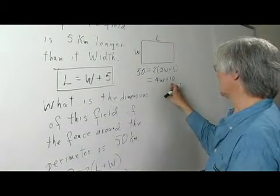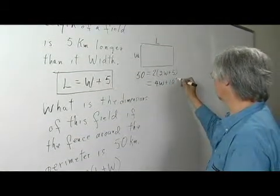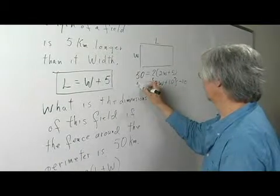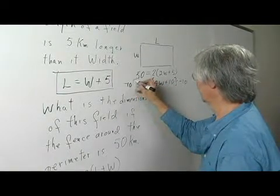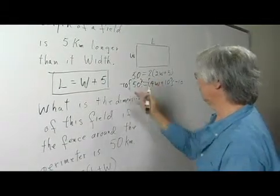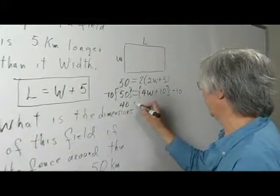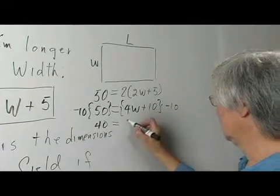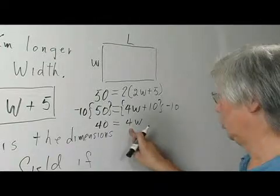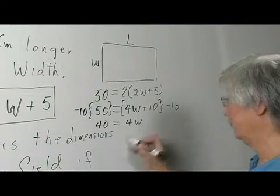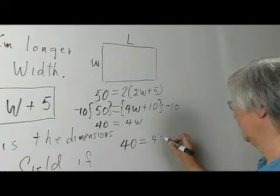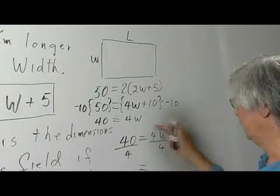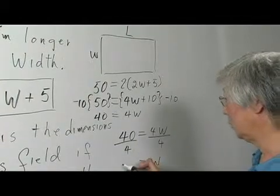I'm going to get rid of the 10 on this side by subtracting 10 from both sides. 50 take away 10 gives me 40; this 10 and this 10 cancel each other. I have 4W. I'm going to get rid of this 4 by dividing both sides by 4. The 4's cancel out. W equals 10.